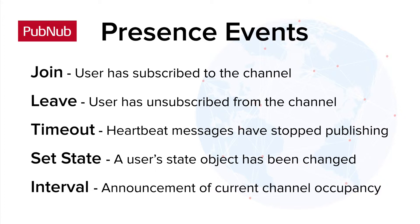When you initialize the PubNum object in your client code, you can specify a heartbeat interval. Heartbeats are PubNum messages sent from the subscriber to tell the network, hey, I'm still connected. If PubNum does not hear a heartbeat from a subscriber during an interval, a timeout event fires for that UUID.